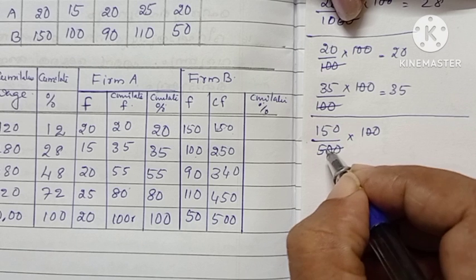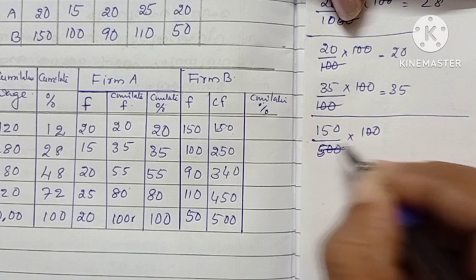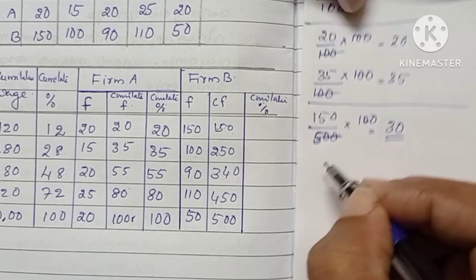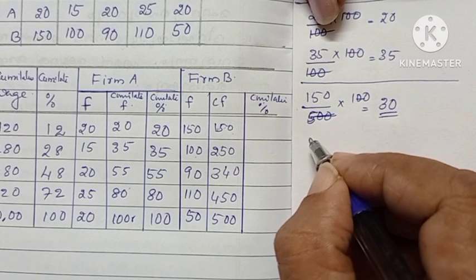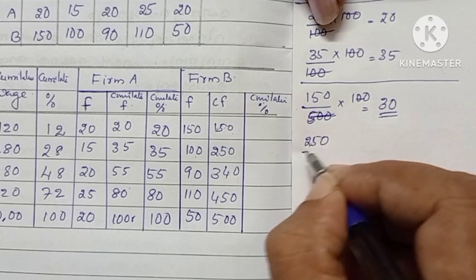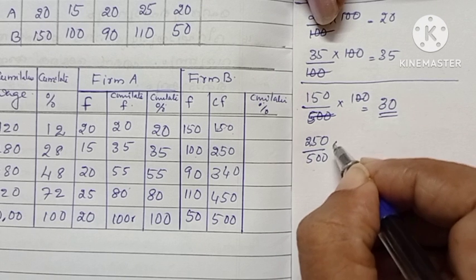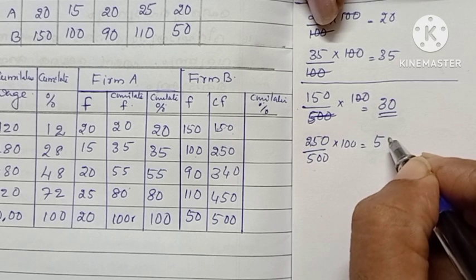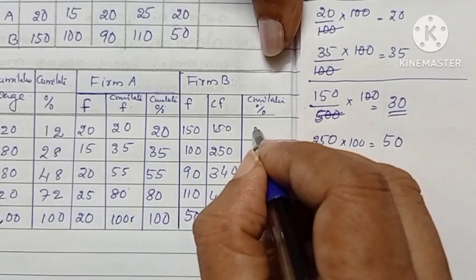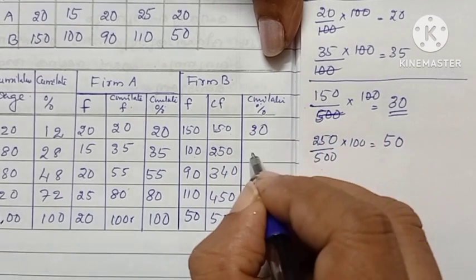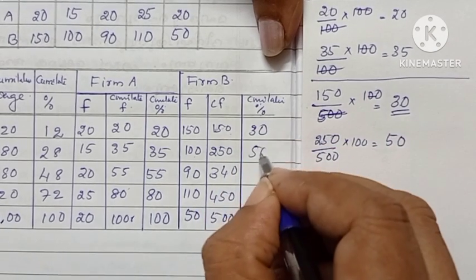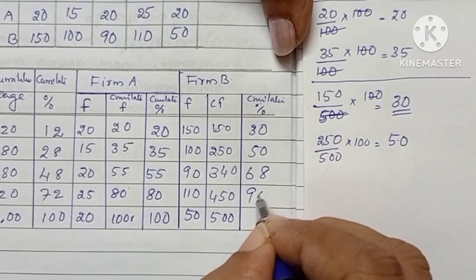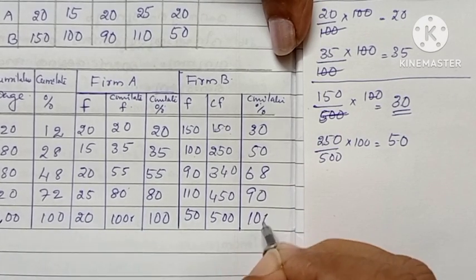For finding percentage we are multiplying by 100. The answer will be 30. Next one: 250 divided by 500 into 100 — the answer will be 50. Then 68, 90, and the last one is 100.